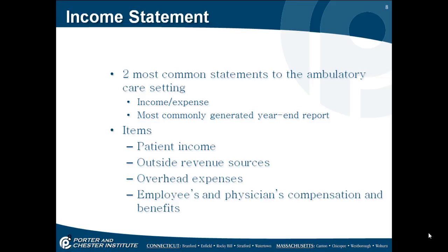Income statement. Two of the most common statements in the ambulatory care setting are income and expenses. It is the most commonly generated year-end report. Items include patient income, outside revenue sources, overhead expenses, and employee and physician compensation and benefits.